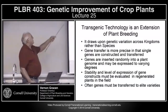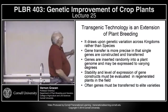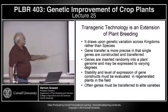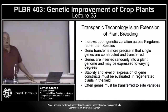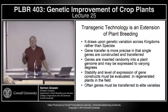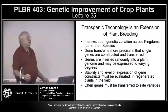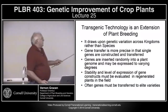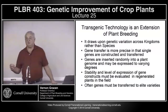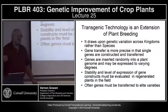The major point is that transgenic technology is nothing but an extension of traditional plant breeding technology — it draws upon genetic variation across kingdoms rather than species. Gene transfer is more precise in that a single gene is constructed and then inserted, but those genes are inserted randomly into a genome, so they could be expressed in many different ways and to different degrees within different genomes. Their ability and level of expression have to be evaluated in regenerated plants in the field.